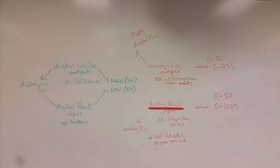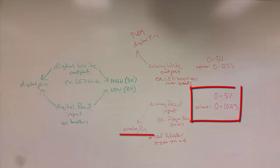Analog read can be used to read the values of a sensor. In this case, the sensor has to be hooked up to an analog pin, not a digital pin. The analog read values will go from the range of 0 to 1023, which are synonymous with 0 to 5 volts.